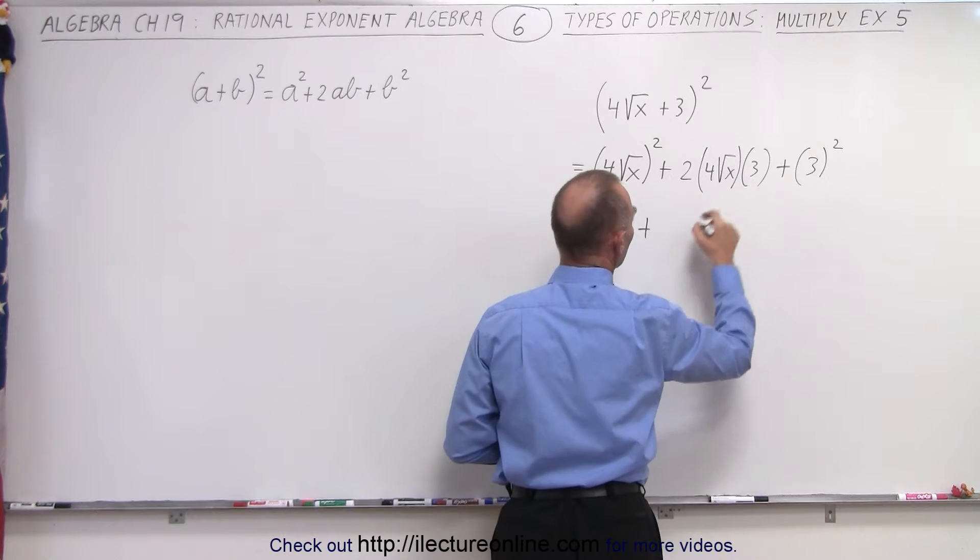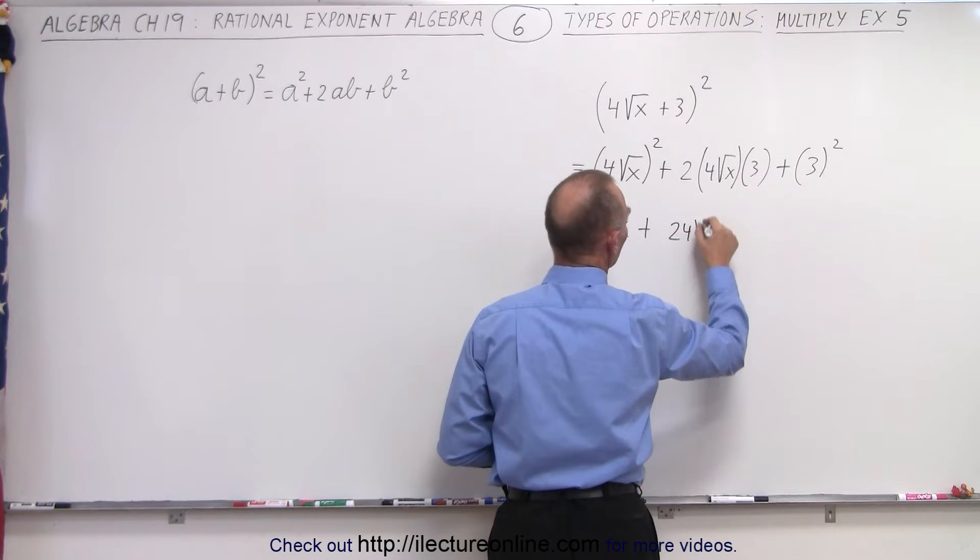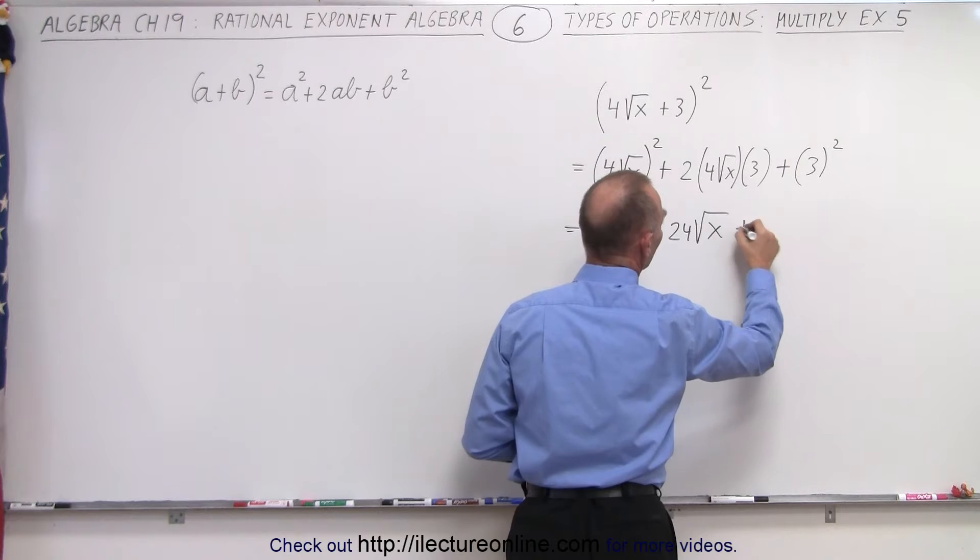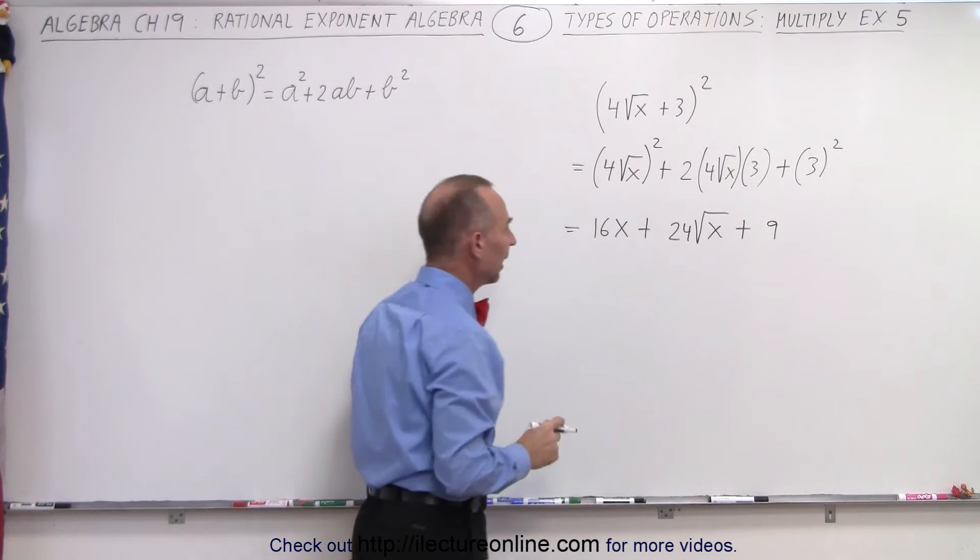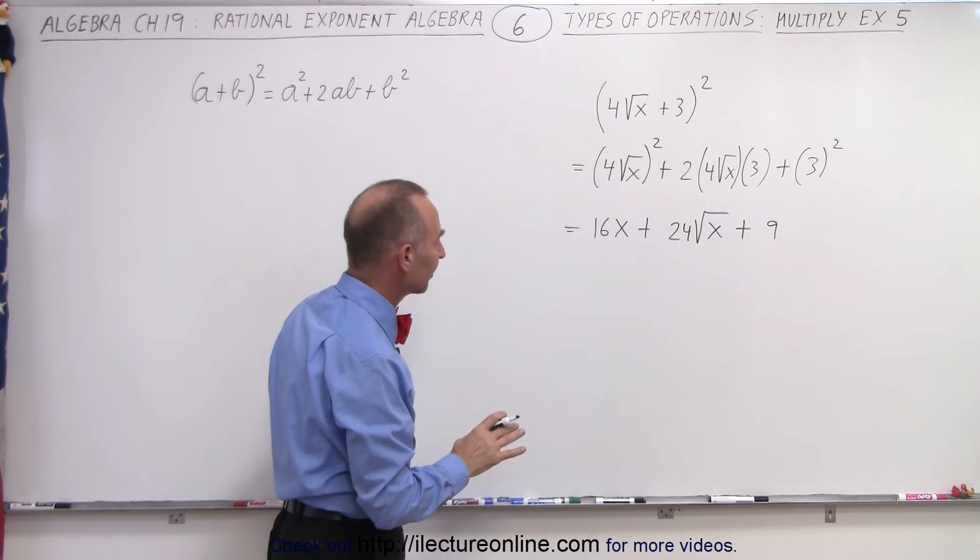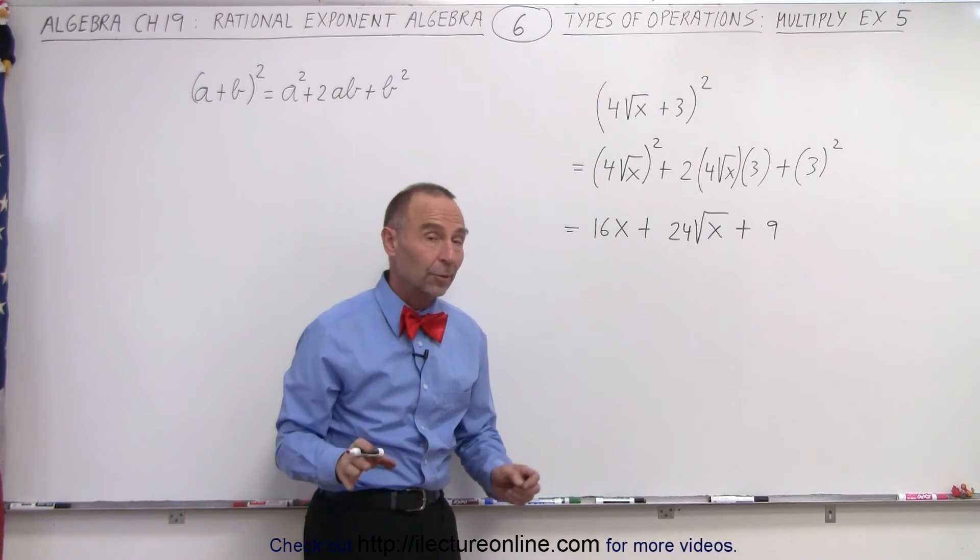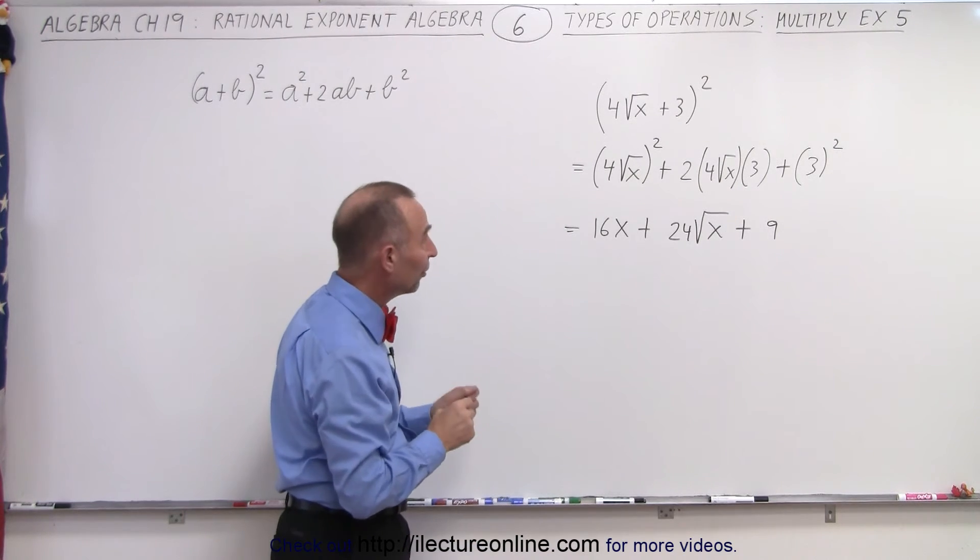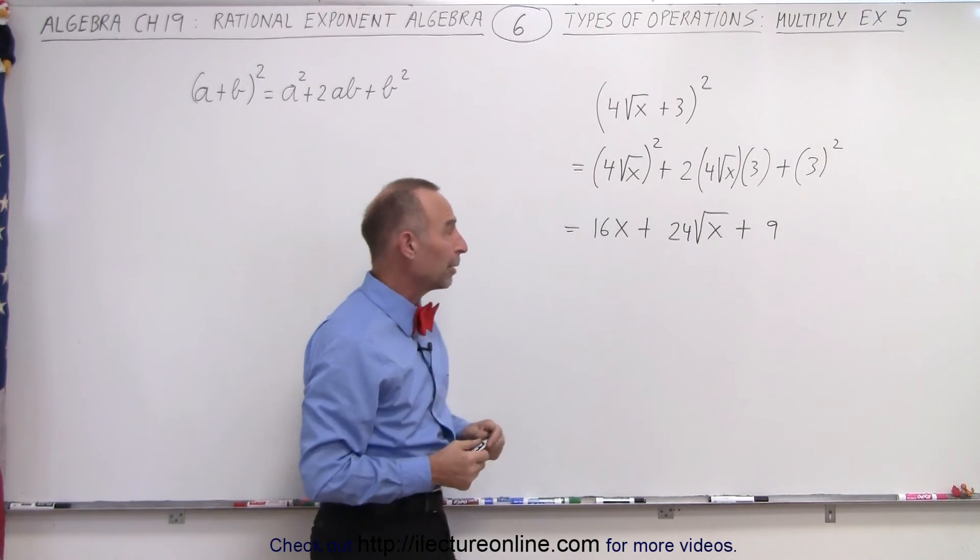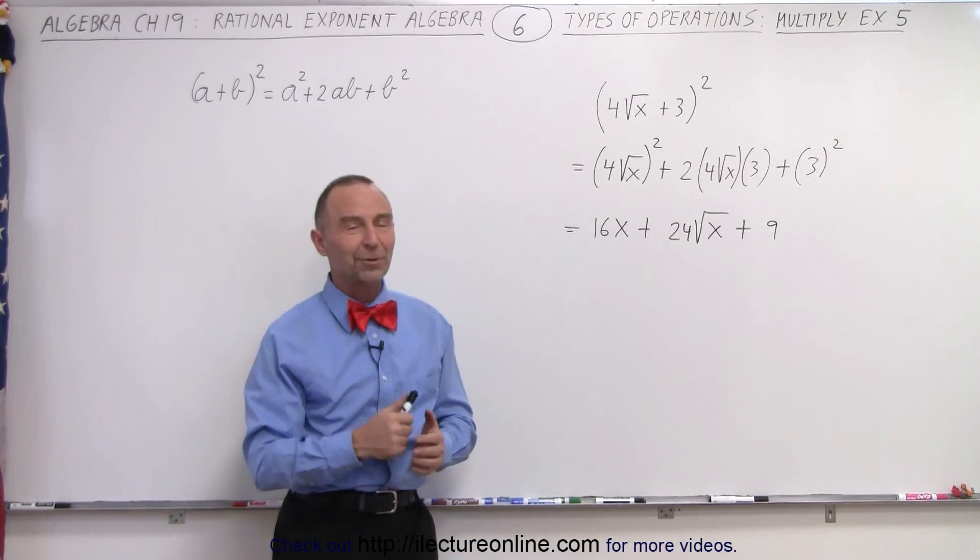which is 8 times 3 which is 24 times the square root of x, and then here 3 squared is simply equal to 9. And it looks like we cannot simplify any further because there's no common terms. So that's the final answer when we multiply that binomial, and that is how it's done.